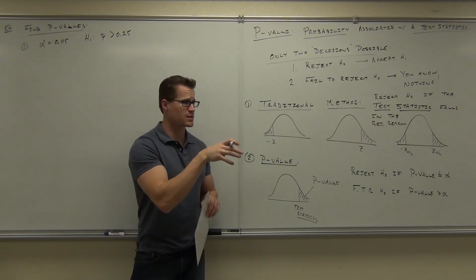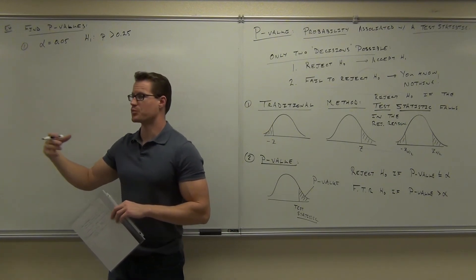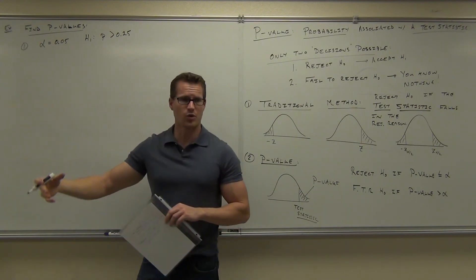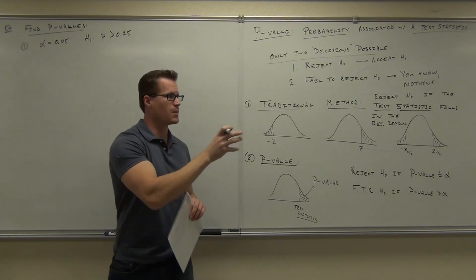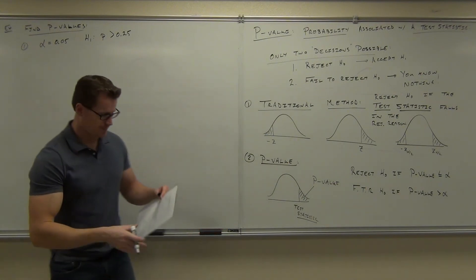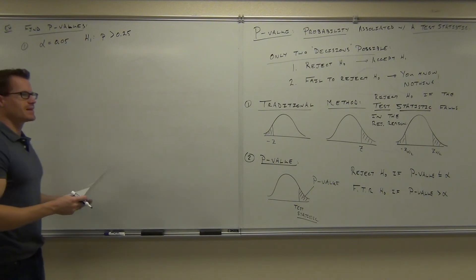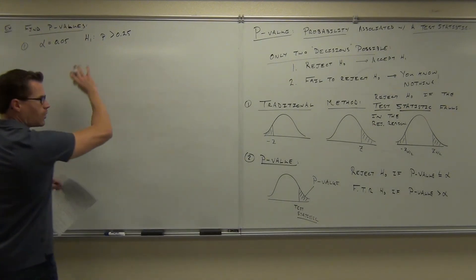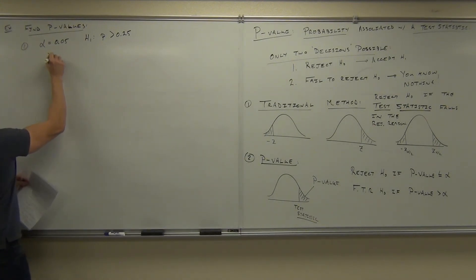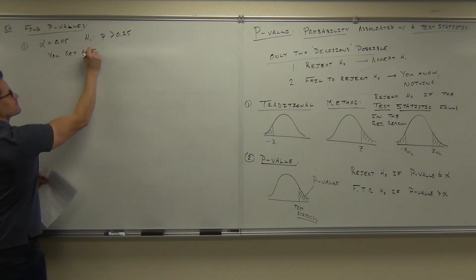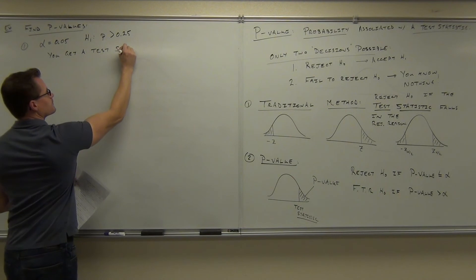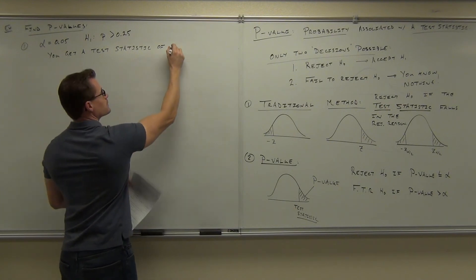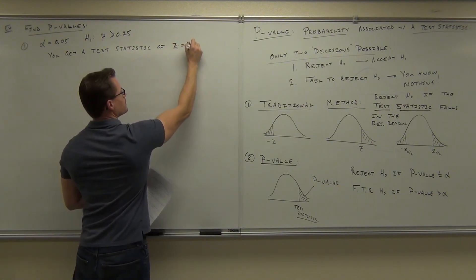The P-value is associated with a test statistic. That P in H₀ or H₁ is talking about a proportion — those are two different P's, which can get confusing. If you're looking up a Z-score and getting an area, that's a P-value. I'm just going to give you the test statistic I found. You did all the work and got a test statistic of Z = 1.18.